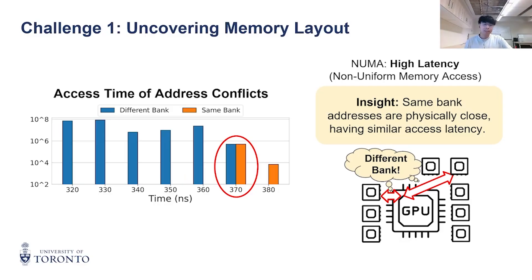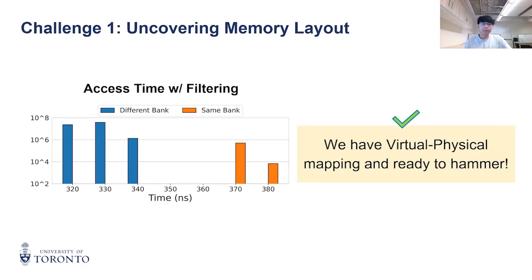We can use this insight to filter out addresses that are too far apart to be in the same bank — those that have high access latency even on their own. After removal of the NUMA effect, we can see a clear cutoff. We now have an effective scheme to retrieve the memory layout for Rowhammer.